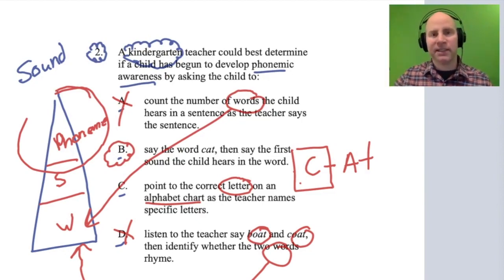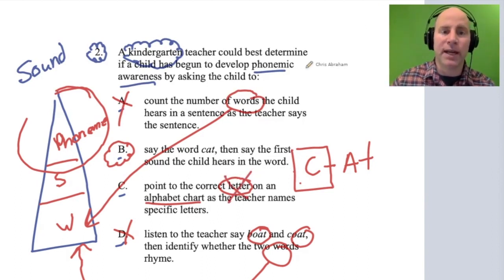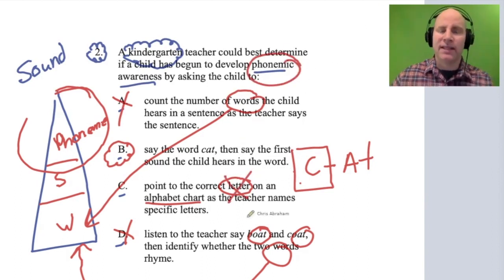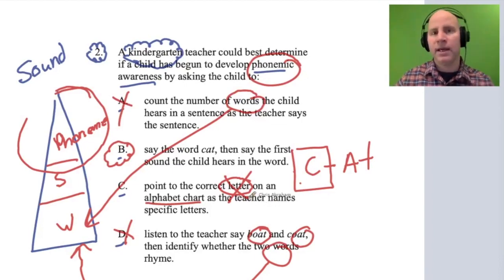We could cross it out because it has the word "letter" in it, and we know that we're doing sound stuff. This is a letter thing, a print thing. We're only dealing with sound activities, and this is a print activity. We could cross it off for that very reason. The answer here is B.